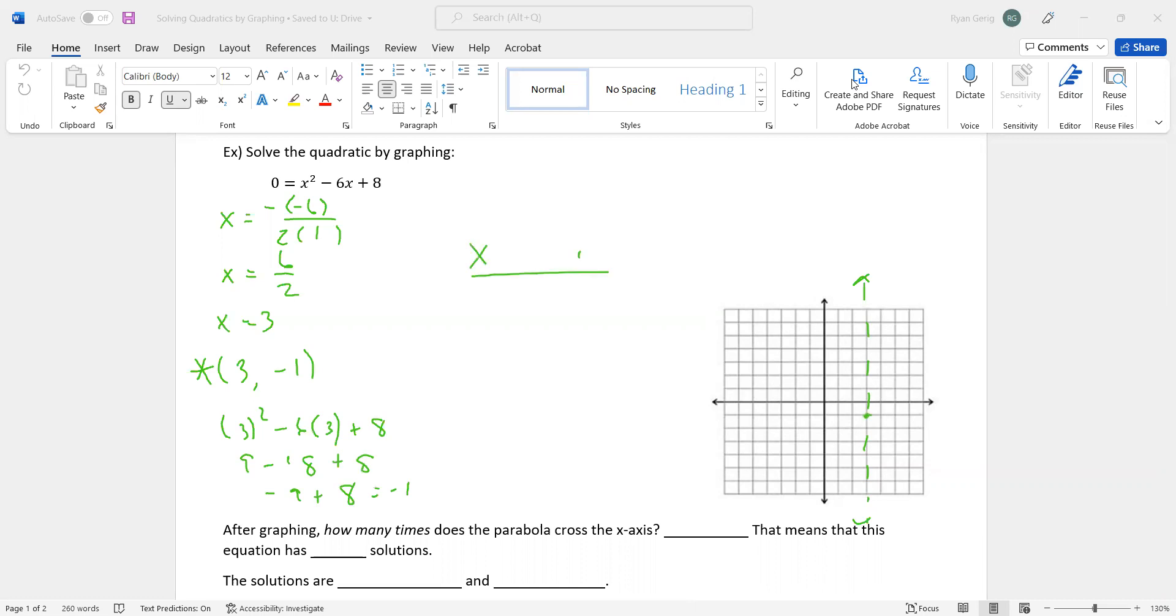And now I'm going to make my table with (3, -1) in the middle. 2 smaller, 2 bigger. Again, nothing different here. 1, I'm going to do 1² is 1, 6 times 1 is 6, plus 8. So 1 - 6 is -5, plus 8 is 3. So 5 is also 3. Now I'm going to do 2. 2² - 6(2) + 8. So that's 4 - 12 + 8. That's -8 + 8. That's 0, which means this is 0. So I'm going to go ahead and plot those. Right 1 up 3, right 2 up 0, right 4 up 0, right 5 up 3.